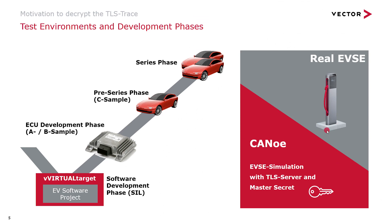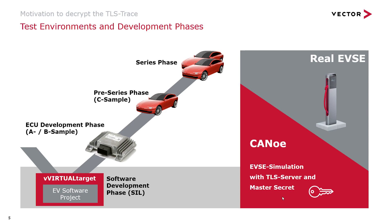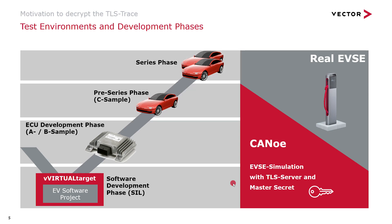We see two different use cases. One use case is you test against real EVSEs. Another use case is you test against an EVSE simulation like our CANoe EVSE simulation — for example, a software-in-the-loop setup with our VAU virtual target which simulates an ECU. You run your simulated ECU against our EVSE simulation, which includes a TLS server. This TLS server has its master secret, so communication can be automatically decrypted. We recommend using the EVSE simulation as long as possible — even with your first A and B samples and your first cars.